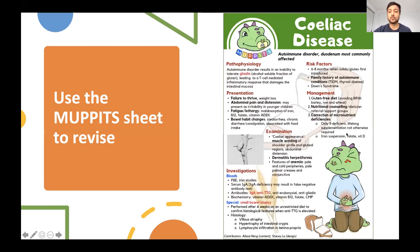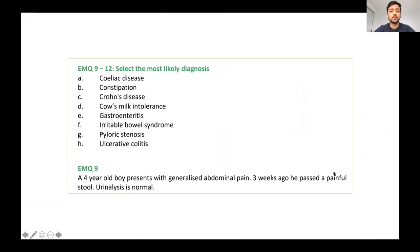I would highly recommend the Muppets summary sheet for this because I'm a visual learner, it's presented quite nicely. They have sheets on all the conditions, so definitely have a look at those.